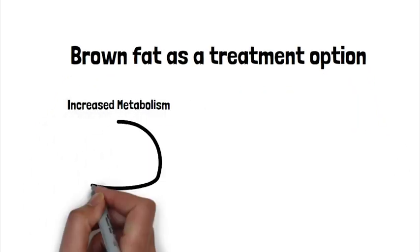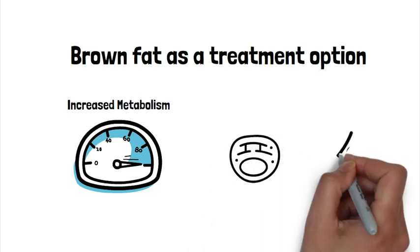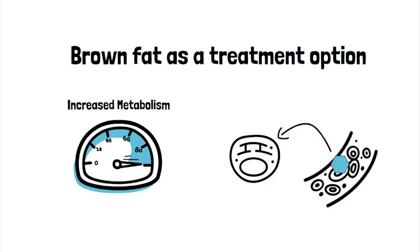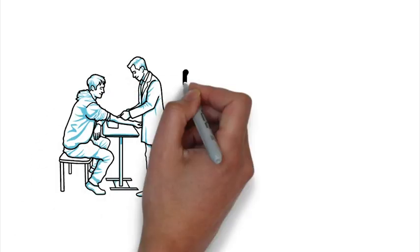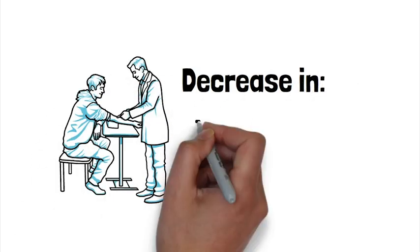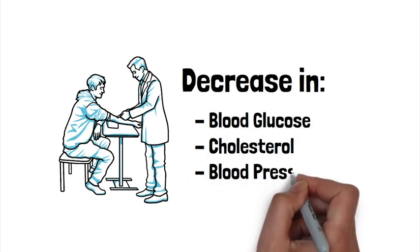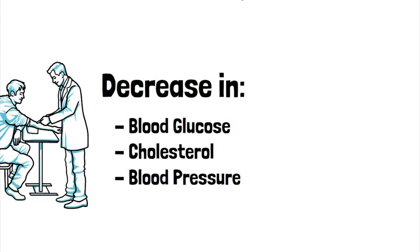With brown fat, when the body's metabolism is increased, cells need more fuel to function, so they take in more glucose and fats from the bloodstream and break them down for energy. This results in desirable outcomes which include a decrease in blood glucose, cholesterol and blood pressure which are especially favorable in treating diabetes and obesity.